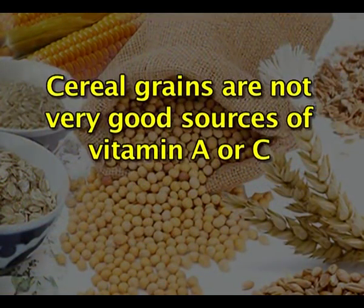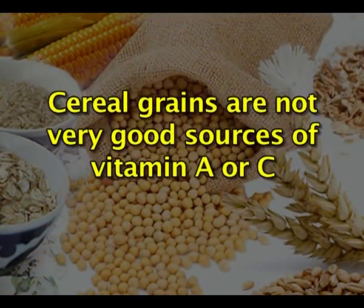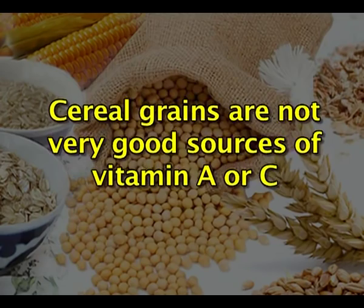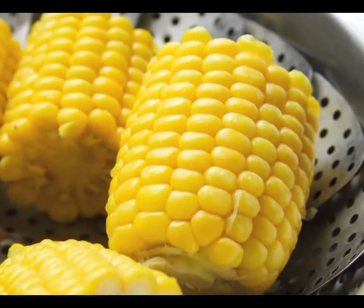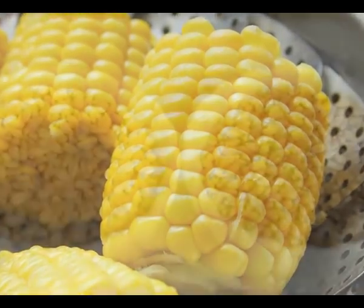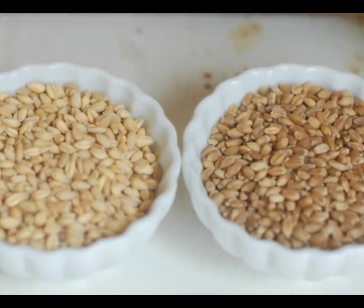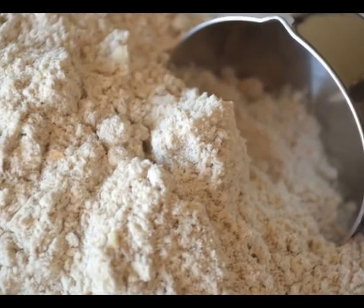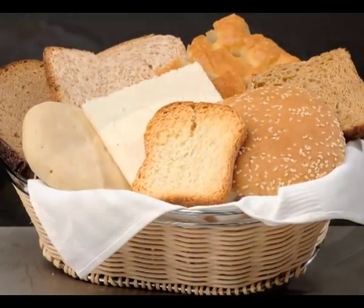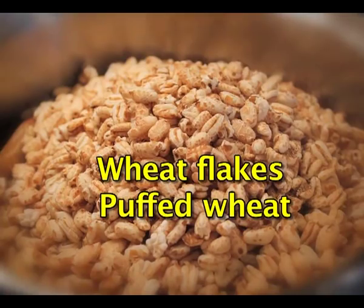Cereal grains are not very good sources of vitamin A or vitamin C — they are poor sources of these vitamins, except maize or corn which is a very good source of vitamin A. Wheat is mostly consumed after milling, that is it is usually converted into flour and then prepared into bread, chapatis, etc. A small quantity of wheat is also converted into breakfast cereals like wheat flakes, puffed wheat and so on.